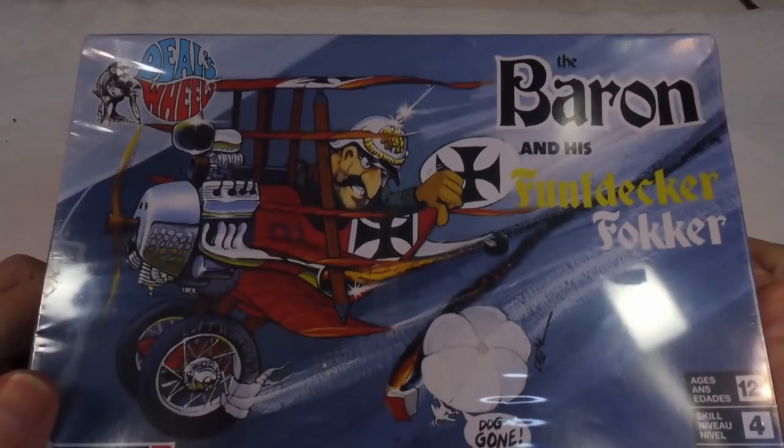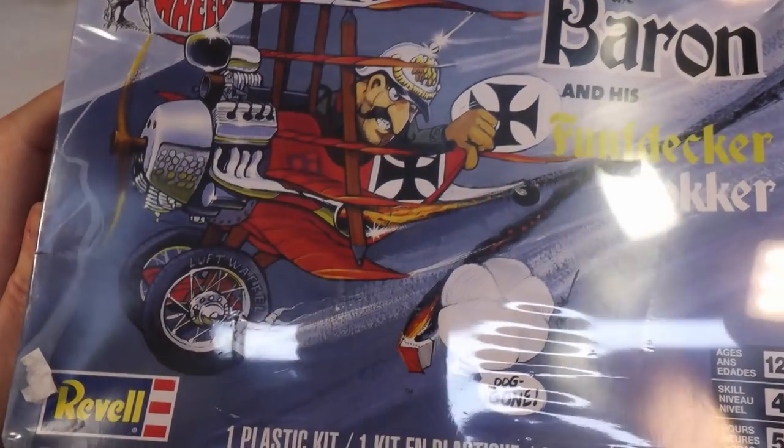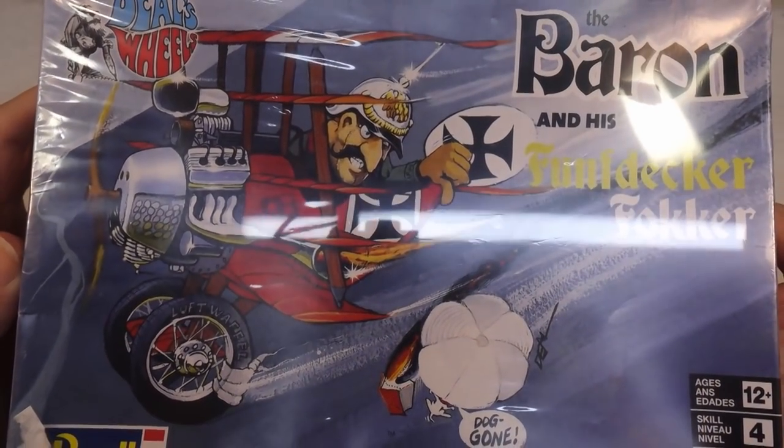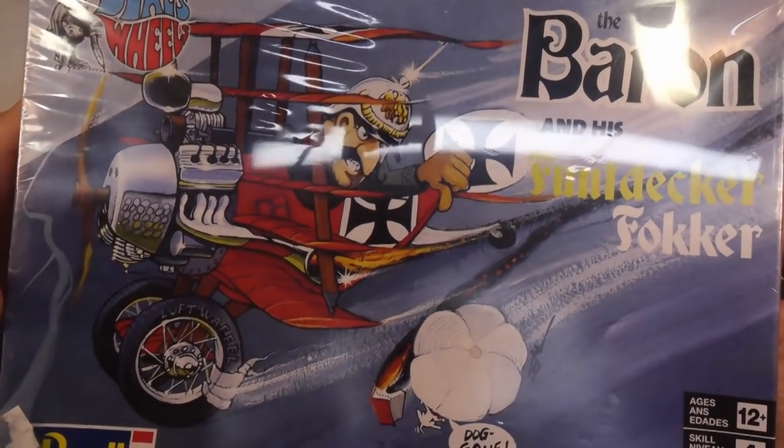Needles and Jellyspoons, welcome back to Badgerworks. Today, this. Yes, this is the Revel Red Baron and his Fumpfdecker Fokker, which I think judging from some of the blurb on the box and from the box art is supposed to be the Red Baron from Peanuts, from the Charlie Brown strips.